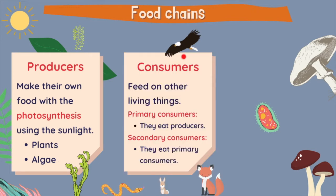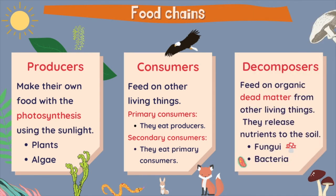Secondly, we have consumers. Consumers feed on other living things, and we can divide them into primary consumers and secondary consumers. The primary consumers eat producers and they are usually omnivores and herbivores. Secondary consumers are omnivores and carnivores. The rabbit is an example of a primary consumer and the fox is an example of a secondary consumer.